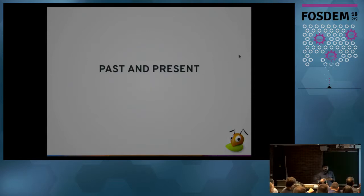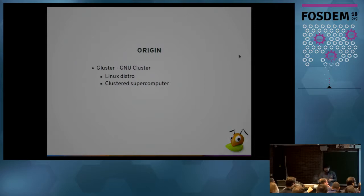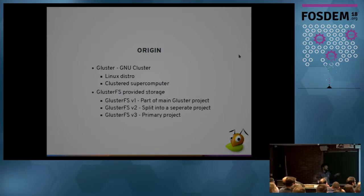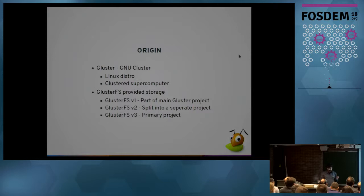Before going on to GlusterFS 4.0, a little bit of history. GlusterFS started as an attempt to create a supercomputer out of commodity hardware. The founder of GlusterFS worked at a US National Laboratory on supercomputers and thought they could do the same using software. GlusterFS V1 was part of that bigger project. By the time V2 came out in the mid-2000s, GlusterFS had taken more importance. By V3, released in the late 2000s, GlusterFS had become the primary project for the Gluster community.